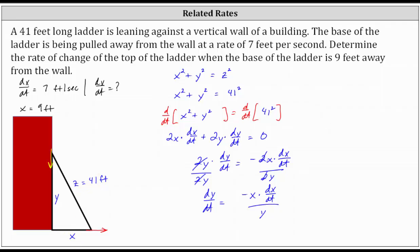So if X is equal to nine, using the Pythagorean theorem, we know Y squared plus nine squared must equal 41 squared, and therefore Y squared is equal to 41 squared minus nine squared,